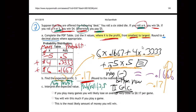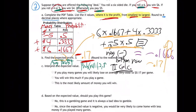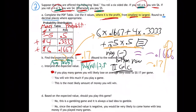So our answer is negative 0.17. It's actually negative 0.17, which is important. That means — if you play many games, you will likely lose, on average, very close to $0.17 per game. Because there's no way you're going to lose $0.17 on one game — you're either going to lose $5 or win $4 or win $6. But on average, if you play many games, it'll be like you're losing $0.17 per game. That's what you should expect — that's why we call it the expected profit or expected value.